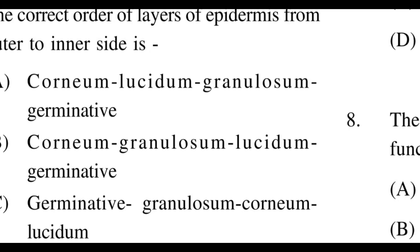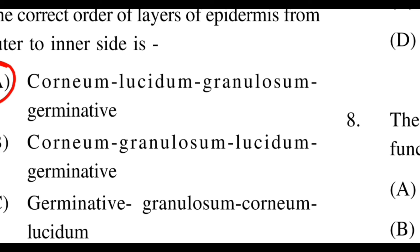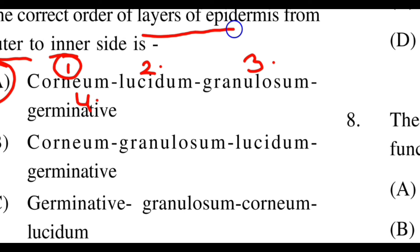Next question: What is the correct order of layers of the epidermis from outer side to inner side? Option A: corneum, lucidum, granulosum, germinative. Option B: corneum, granulosum, lucidum, germinative. Option C: germinative, granulosum, corneum, lucidum. Option D: germinative, corneum, lucidum, granulosum. The right answer is option A. From outer to inner: corneum, lucidum, granulosum, and germinative. This is the correct order of the layers of the epidermis.